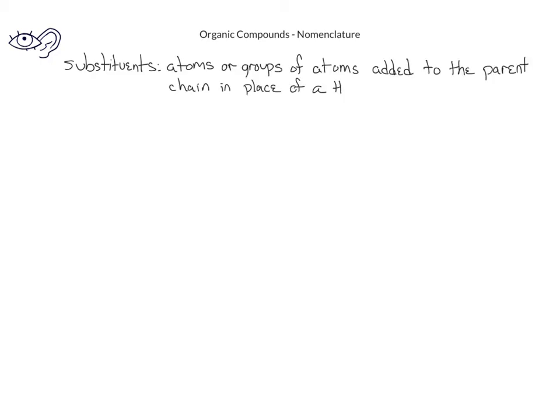Now that we've learned how to name the main carbon chain using the prefix, infix, and suffix, let's examine how to name the substituents. Substituents are simply atoms or groups of atoms that have been added in place of, or to substitute for, a hydrogen on the main carbon chain. The first type of substituent we may encounter will be halogen atoms such as fluorine, chlorine, bromine, or iodine. When we use these atoms as substituents, we name them fluoro, chloro, bromo, and iodo.